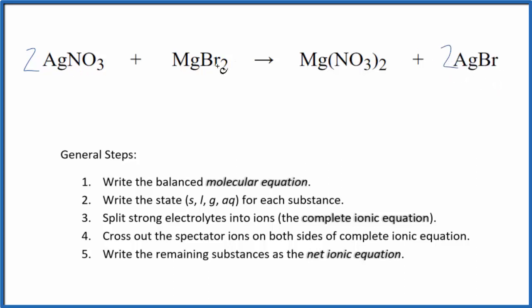I have two bromines, two bromines, one magnesium and one magnesium. This equation is balanced.